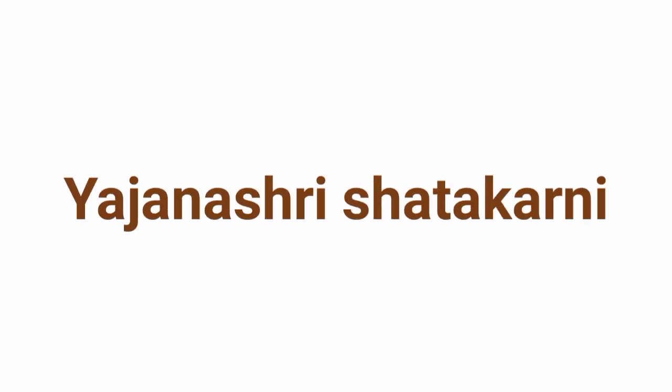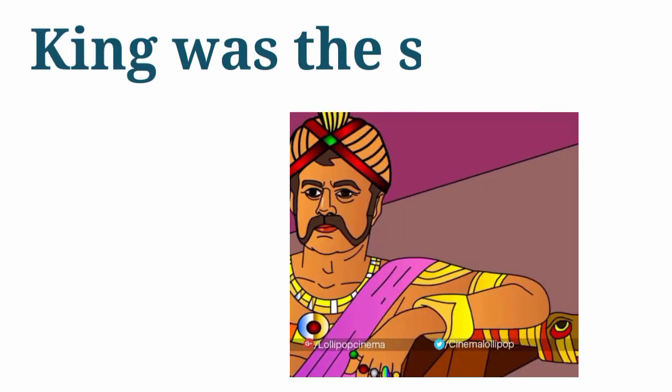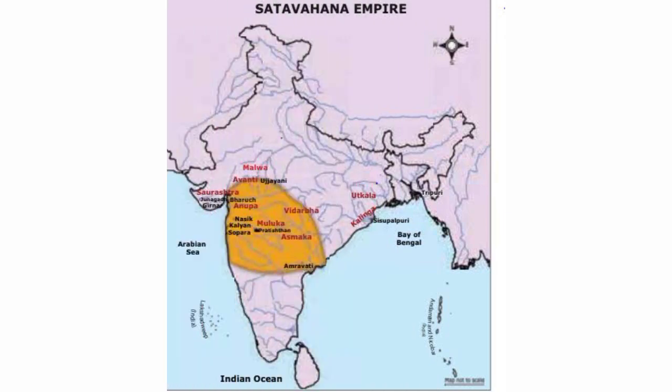The last king of this dynasty was Shri Shatakarni. During his time, on account of the continual attacks by the Shakas, the empire stood devastated. During the Shatavahanas' rule, the king was supreme and the center of all administrative systems. The kingdom was divided into provinces for administrative purposes, called Janapadas.